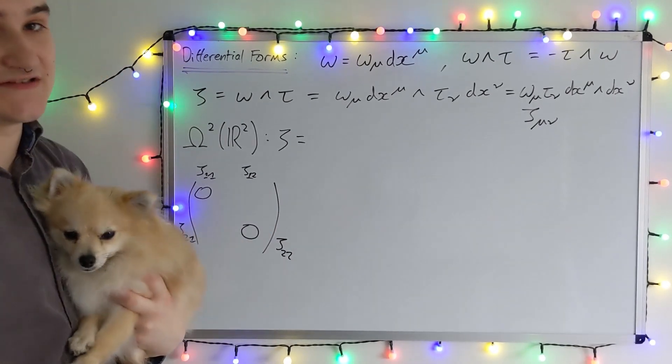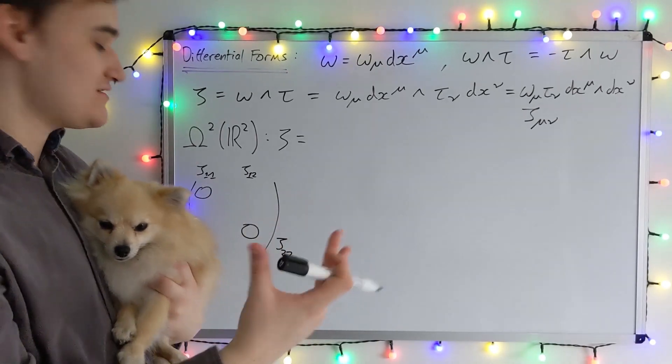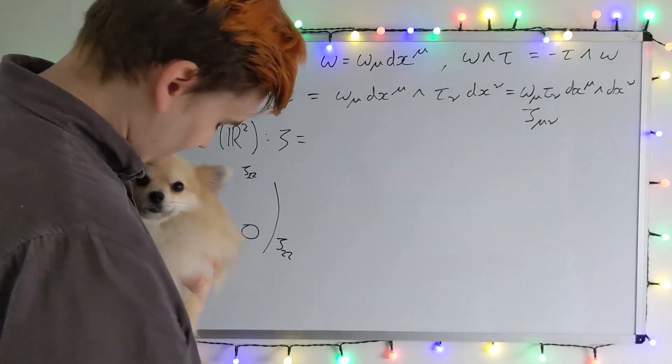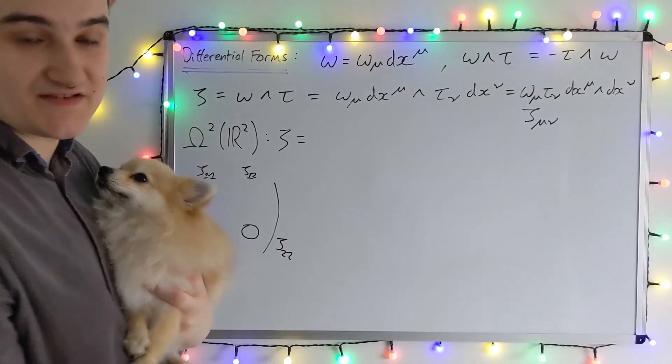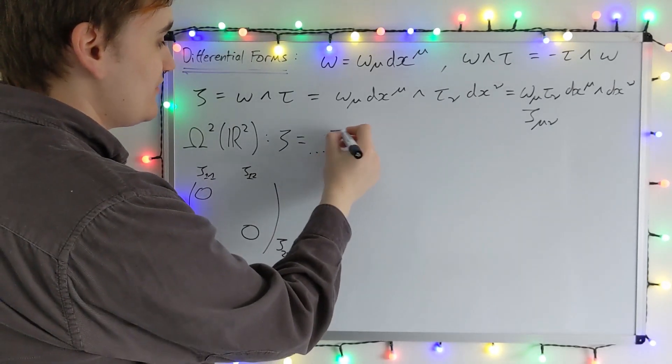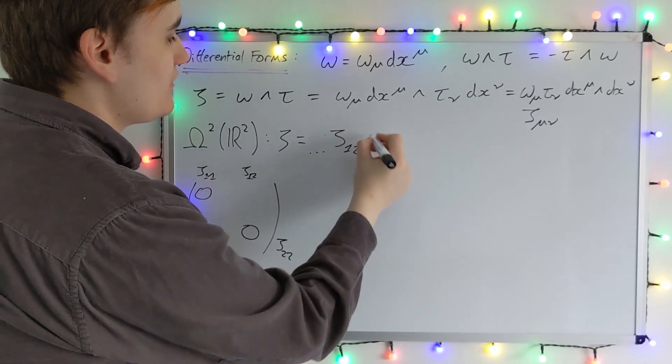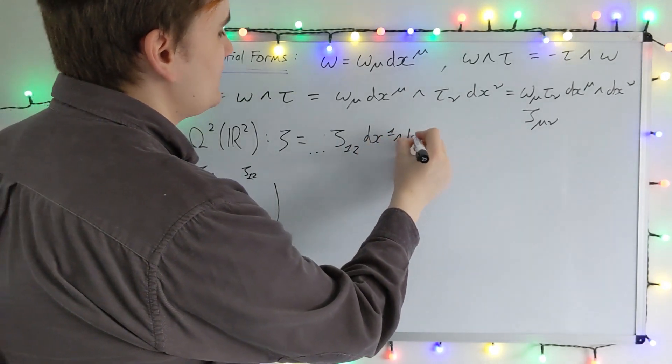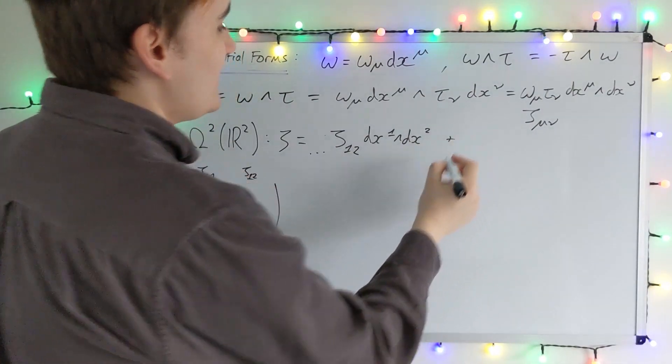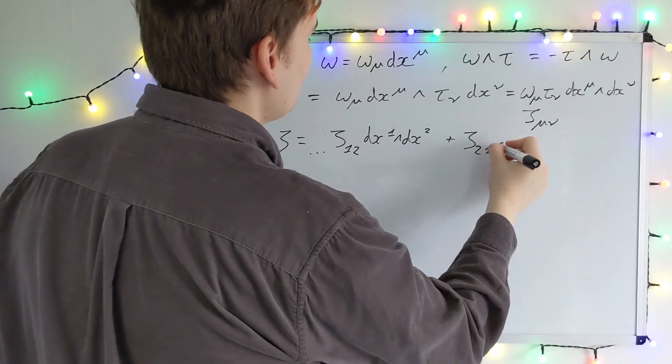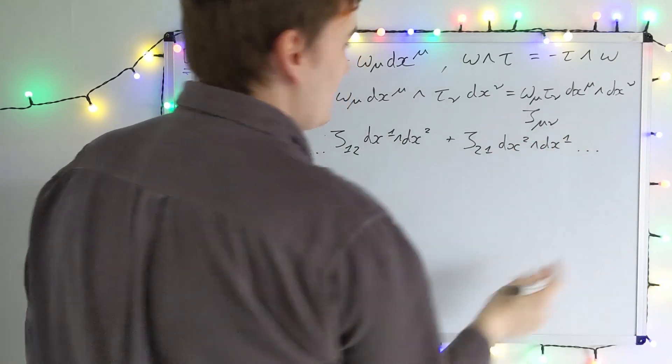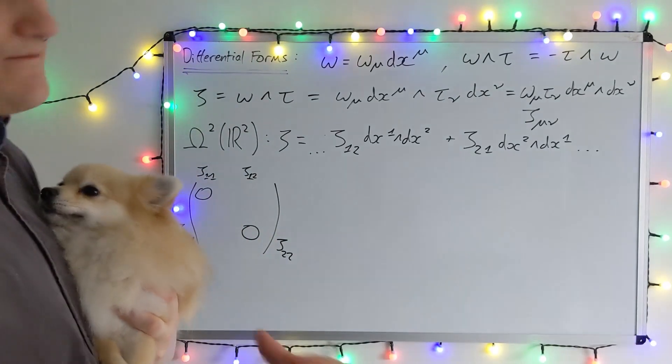And now let's see what happens to these off diagonal components. So the next term in the sum is going to be, well the 1 1 term has vanished, but zeta 1 2, dx 1 wedge dx 2. Okay. And then the next term will be zeta 2 1, dx 2 wedge dx 1. And then the zeta 2 2 term vanishes.